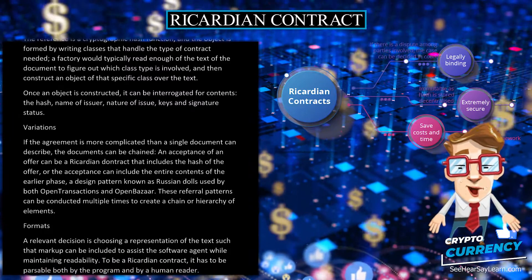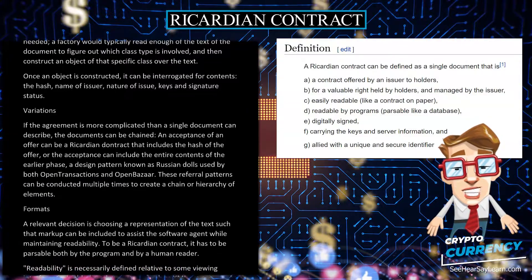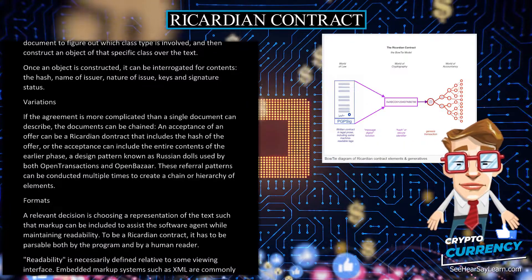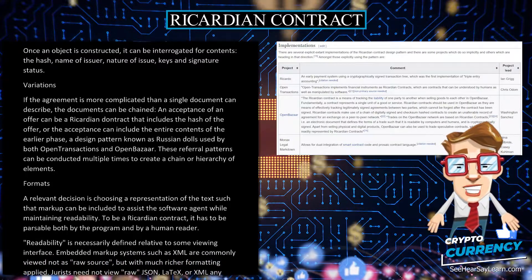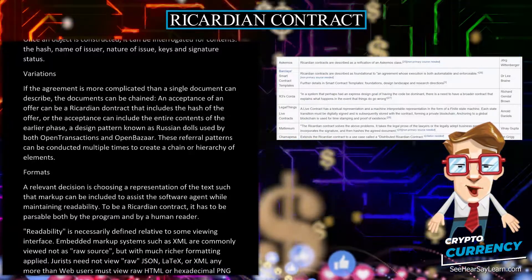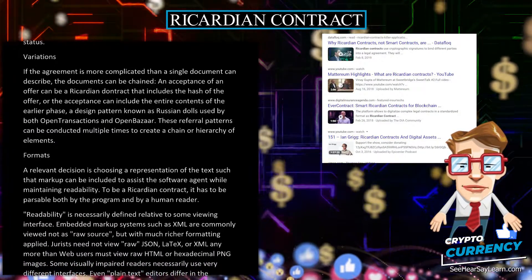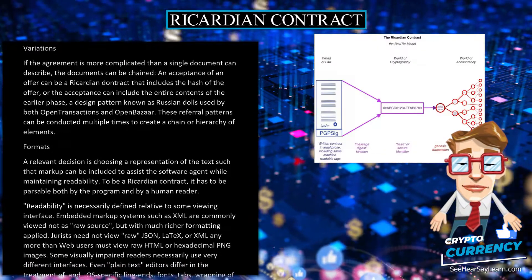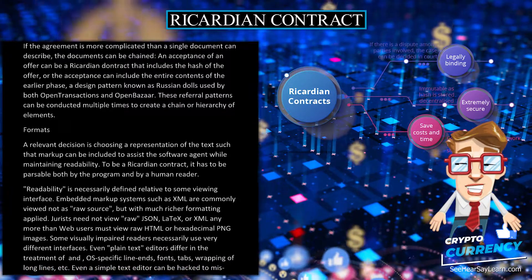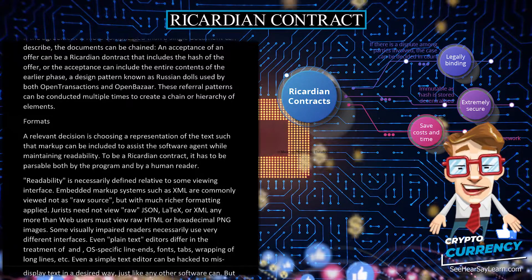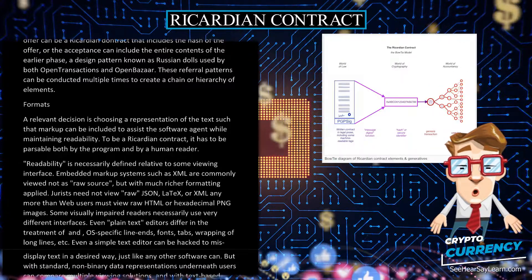A relevant decision is choosing a representation of the text such that markup can be included to assist the software agent while maintaining readability. To be a Ricardian contract, it has to be parsable both by the program and by a human reader. Readability is necessarily defined relative to some viewing interface. Embedded markup systems such as XML are commonly viewed not as raw source, but with much richer formatting applied. Jurists need not view raw JSON, LaTeX, or XML any more than web users must view raw HTML or hexadecimal PNG images. Some visually impaired readers necessarily use very different interfaces.